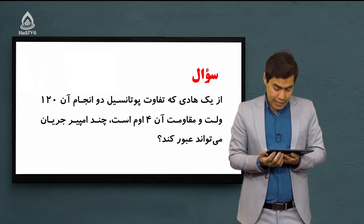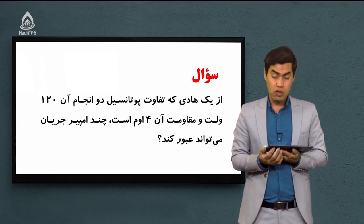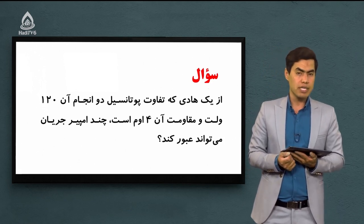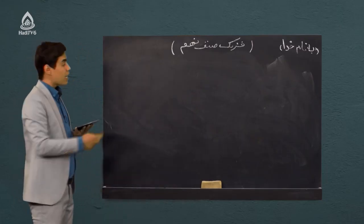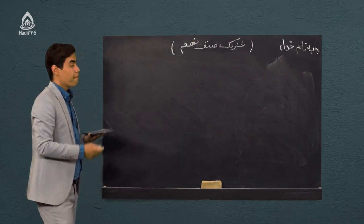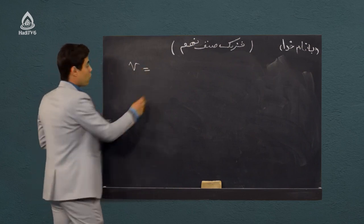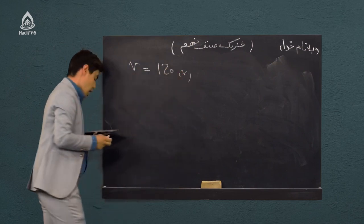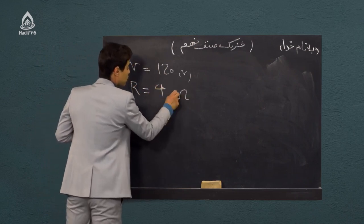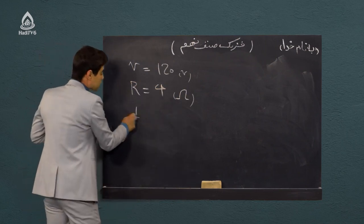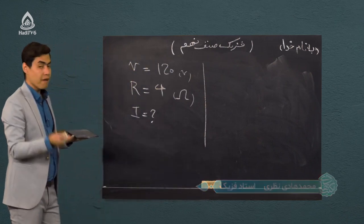سوال با هم بخانیم: از یک هادی که تفاوت پتانسیل دو انتهای آن 120 ولت و مقاومت آن 4 اوم است، چند امپیر جریان می‌تواند عبور کند؟ اطلاعات مسئله را می‌نویسیم. تفاوت پتانسیل V = 120 ولت. مقاومت R = 4 اوم. جریان I از ما خواسته. فرمول اینه: R = V/I. الان I مجهوله.